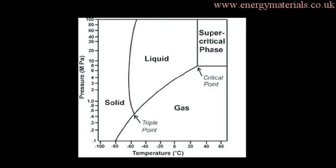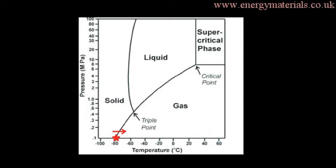If we look at the temperature-pressure phase diagram for carbon dioxide, there are the usual three states of matter: solid, liquid, and gas. There is also a supercritical region where CO2 can behave as a liquid and a gas simultaneously, which has interesting characteristics for solvent extraction. Normal atmospheric pressure is shown at the bottom of the graph on the Y scale. At this pressure, as solid CO2 warms up, it converts directly from a solid into a gas — a process known as sublimation, and the historical reason why solid carbon dioxide is called dry ice. Effectively, it does not melt; it goes directly from a solid into a gas.